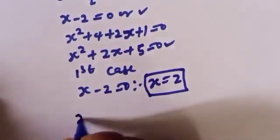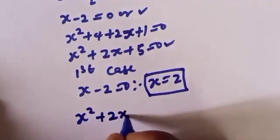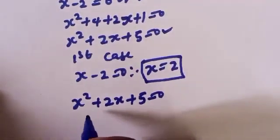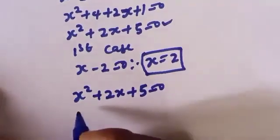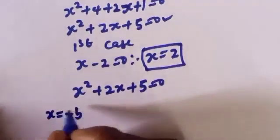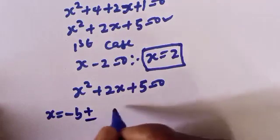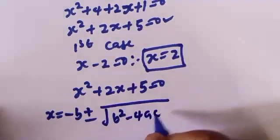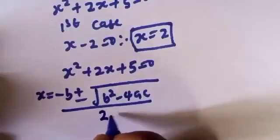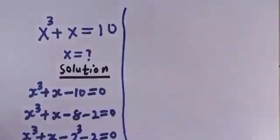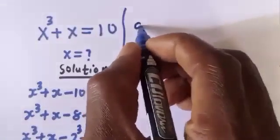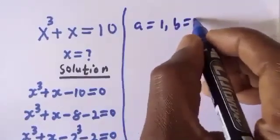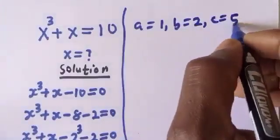From the second case we have s squared plus 2s plus 5. Let's solve this using the quadratic general formula: s is equal to minus b plus or minus square root of b squared minus 4ac, over 2a. Where A is equal to 1, B is equal to 2, and C is equal to 5.